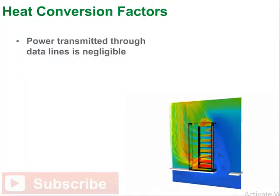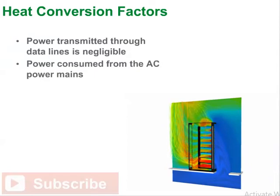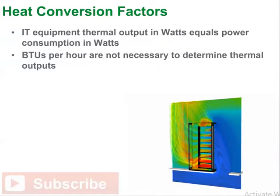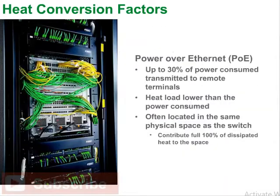The power transmitted by computing or IT equipment through data lines is negligible. Therefore, the power consumed from the AC power mains is essentially all converted to heat. This means the thermal heat output of IT equipment in watts simply equals its power consumption in watts. BTU per hour, as sometimes provided in data sheets, is not necessary — the thermal output is simply the same as the measured power input. The one exception is Power over Ethernet, or PoE, switches, where up to 30% of the power consumed may be transmitted to remote terminals, so their heat load may be lower than the electrical power they consume.